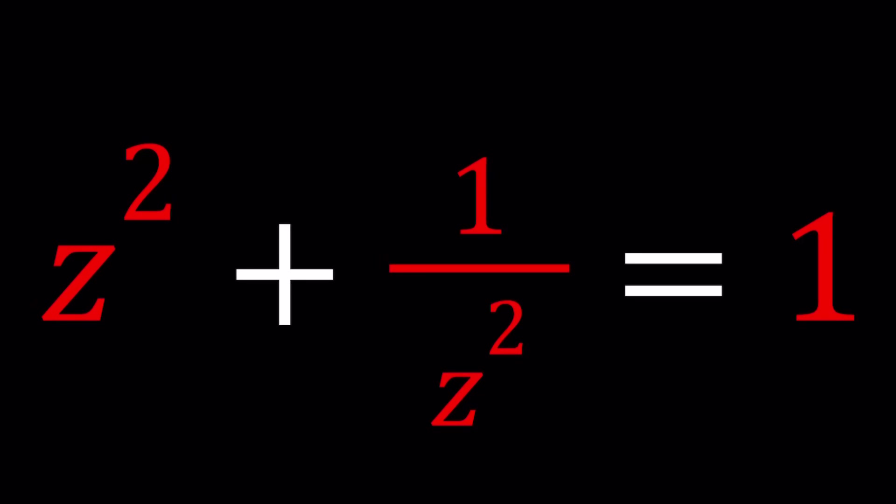Hello everyone. Welcome to a plus bi. This channel is all about complex numbers, and in this video we're going to be solving a very nice equation. We have z squared plus one over z squared equals one, and we're going to be solving for z values. I'll be presenting more than one method — let's see how many methods we can come up with.